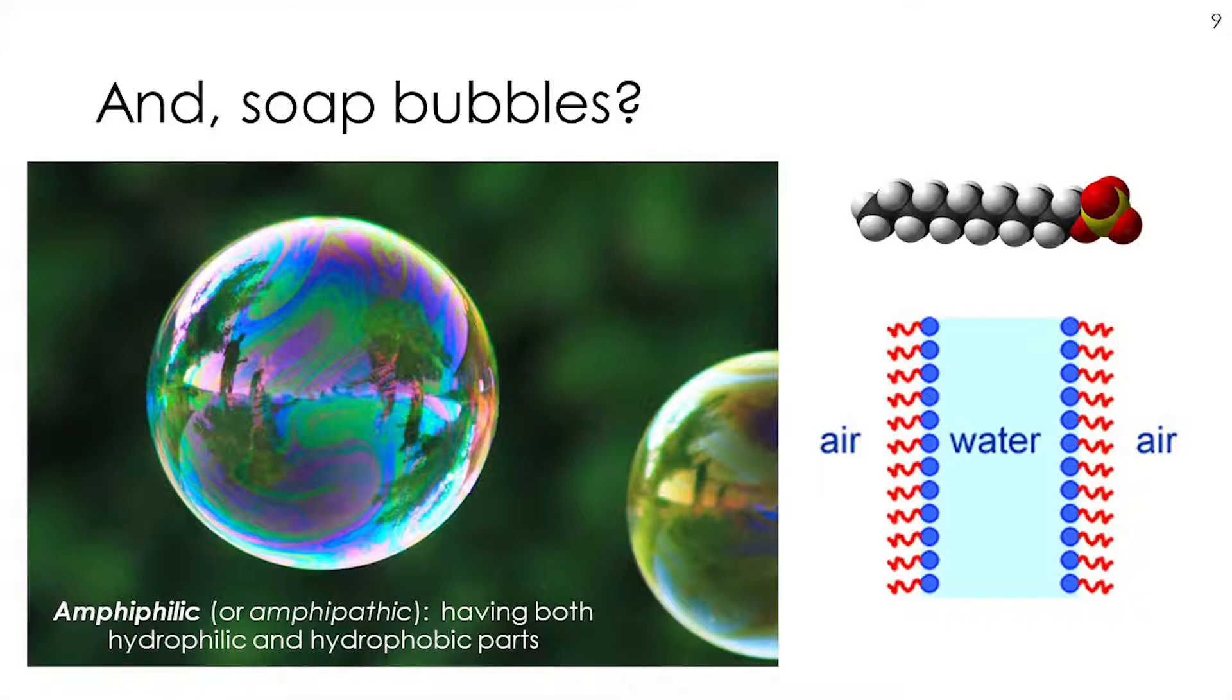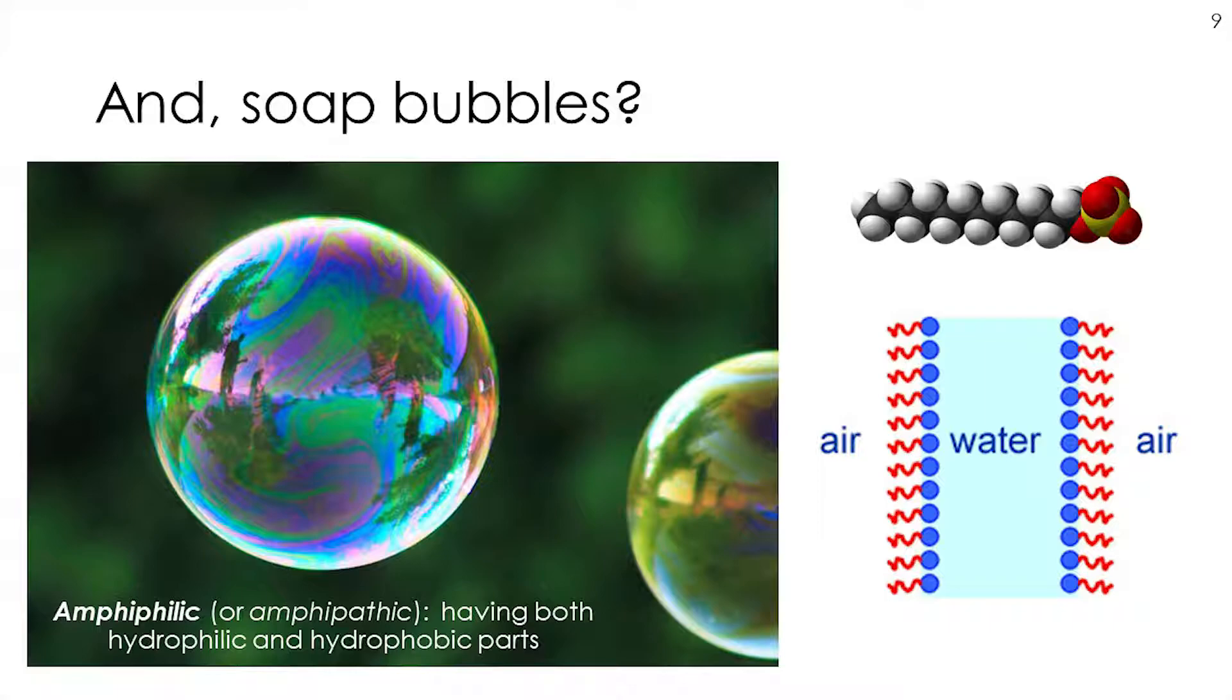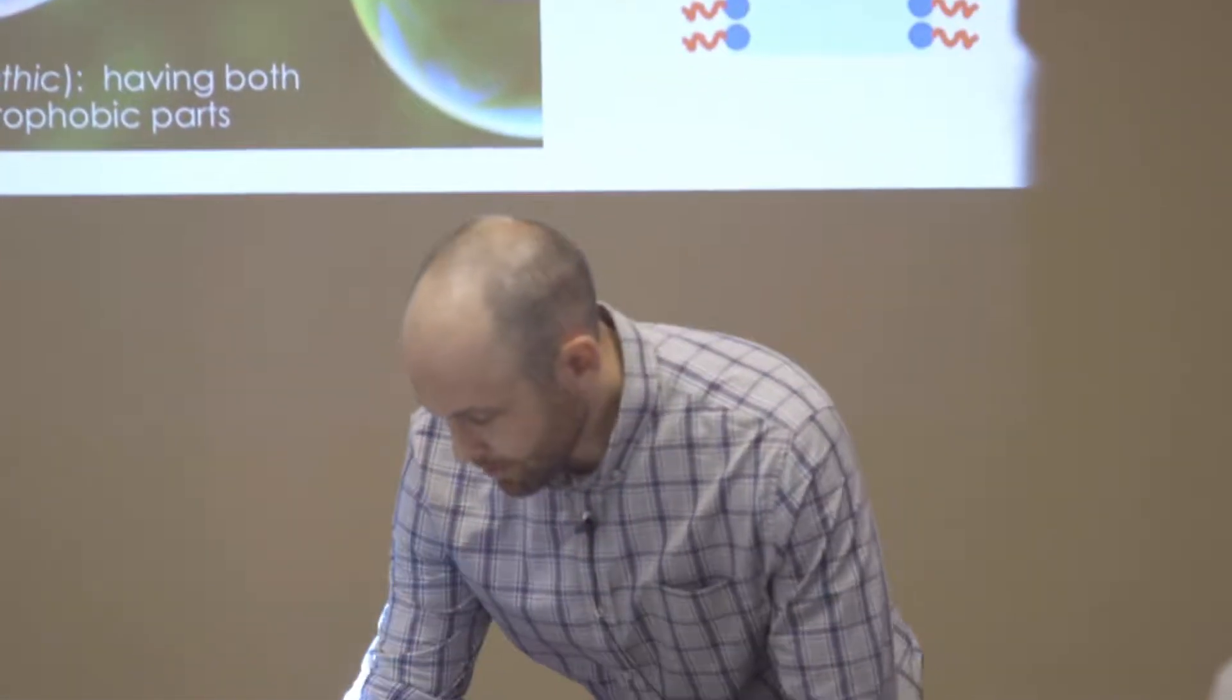How does this relate to soap bubbles? The soap molecule looks quite similar to the lipid molecule. These two acyl chains or fatty acid tails are the hydrophobic part that don't like water, and this head-like unit is the hydrophilic part that likes water. A soap molecule usually has one leg or tail but has that same division. It's about the same size, about two nanometers.